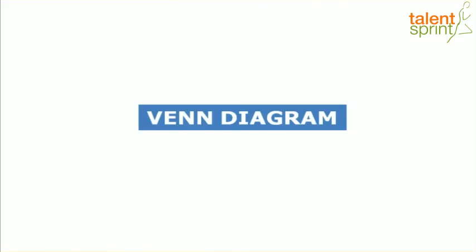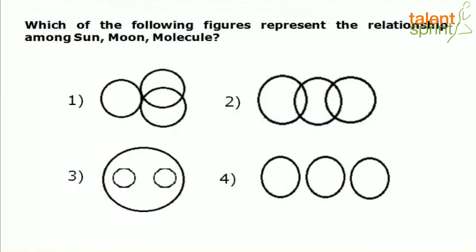Let's start with the first type. The first question says: which of the following figures represents the relationship among Sun, Moon and molecules? Now understand — if you are aware, Sun and Moon are both made up of molecules. So which of the options correctly shows the relationship between these three objects?